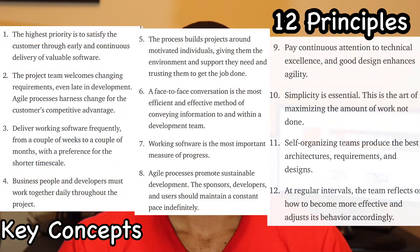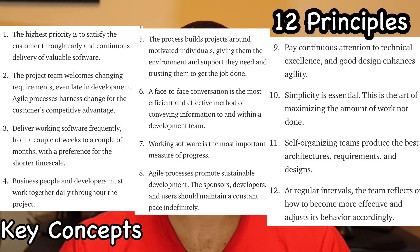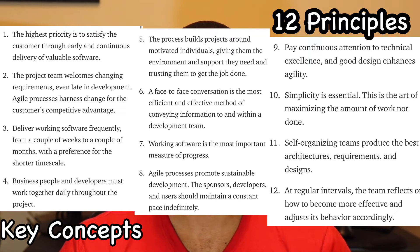Now the 12 principles. One: the highest priority is to satisfy the customer through early and continuous delivery of valuable software. Two: the project team welcomes changing requirements, even late in development — Agile processes harness change for the customer's competitive advantage. Three: deliver working software frequently, from a couple of weeks to a couple of months, with a preference on shorter timescales. Four: business people and developers must work together daily throughout the project.